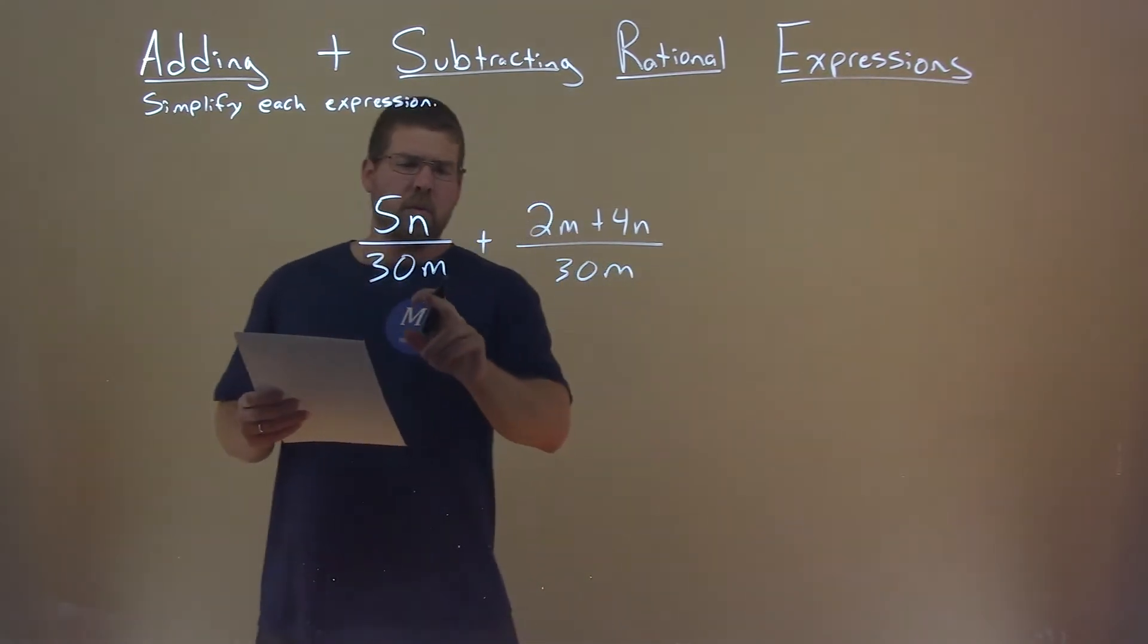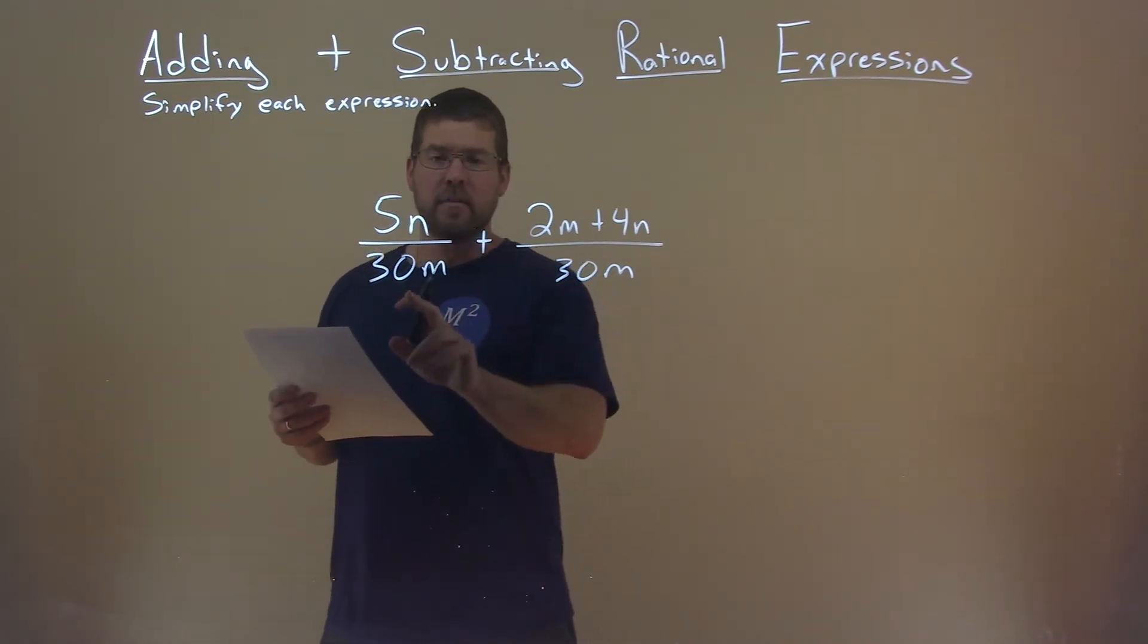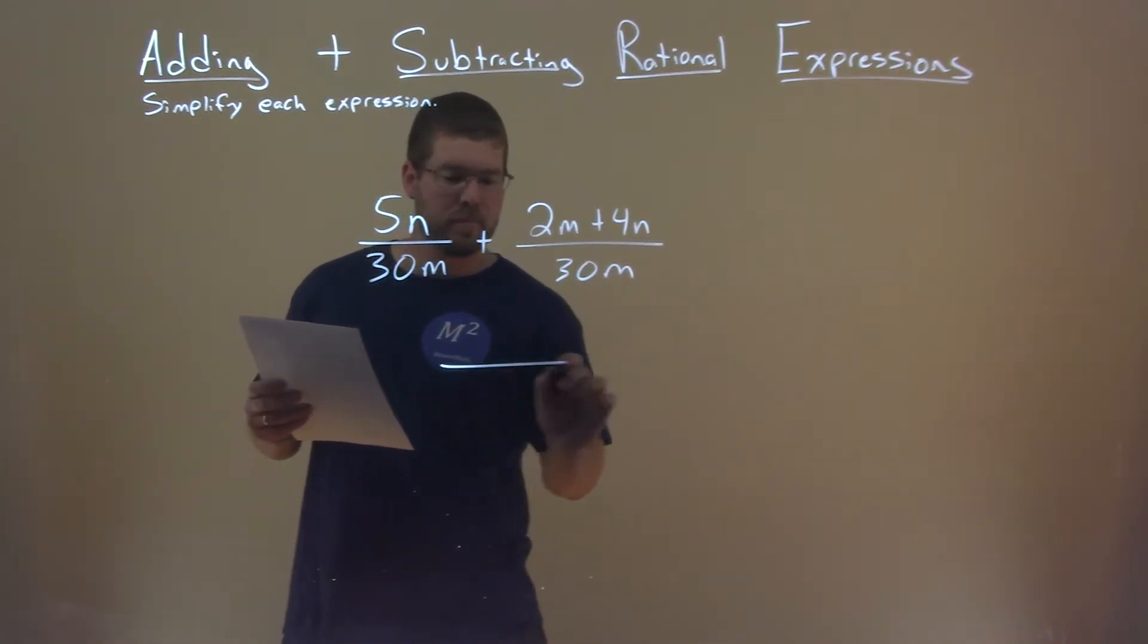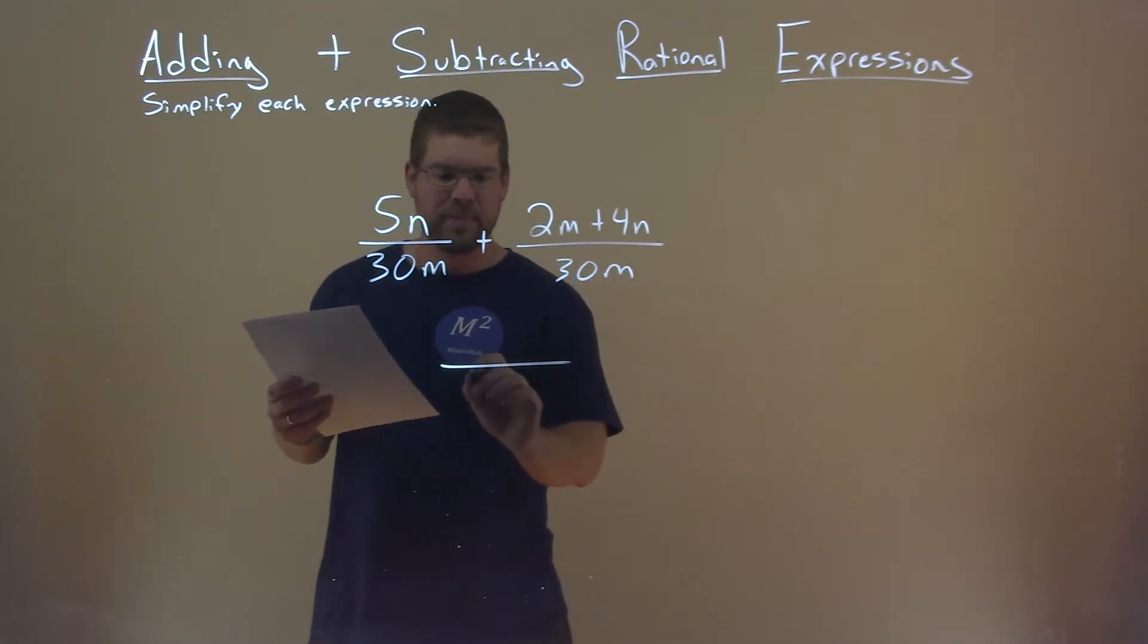Well, we have the same denominator in both of our fractions here, so when we add them, we just have that 30m stay in the denominator.